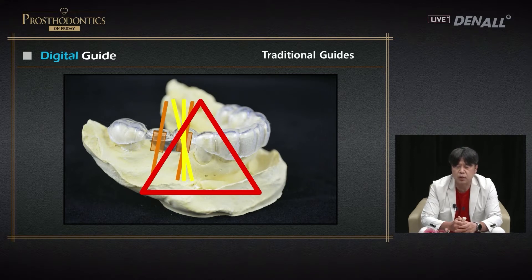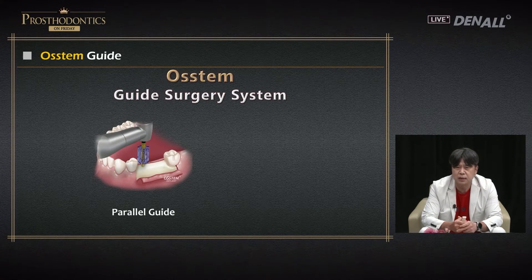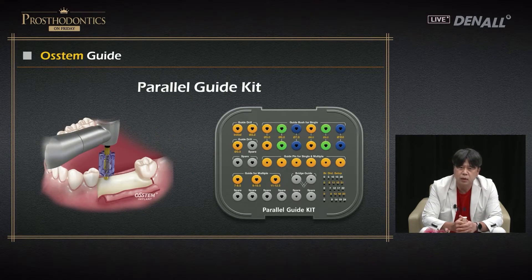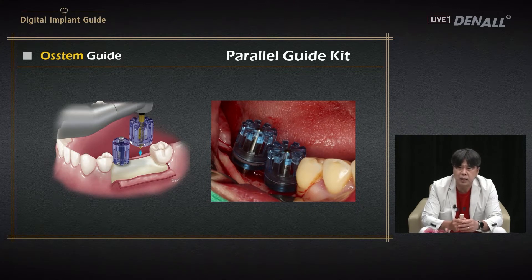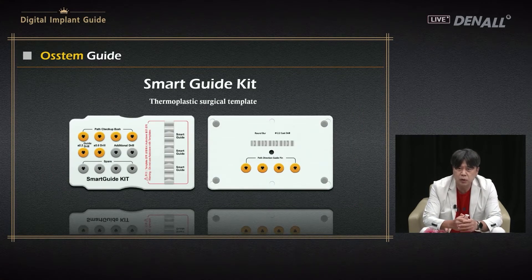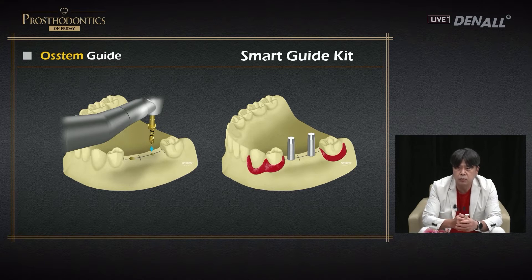To resolve the problem, Austin has two conventional guide systems. One is the parallel guide and the other is the smart guide, which is currently used. The parallel guide has a cylindrical sleeve — an appropriate size can be selected befitting the patient for surgery. Mesodistal distance or the distance between implants can be controlled, and to a certain degree the direction can be controlled.